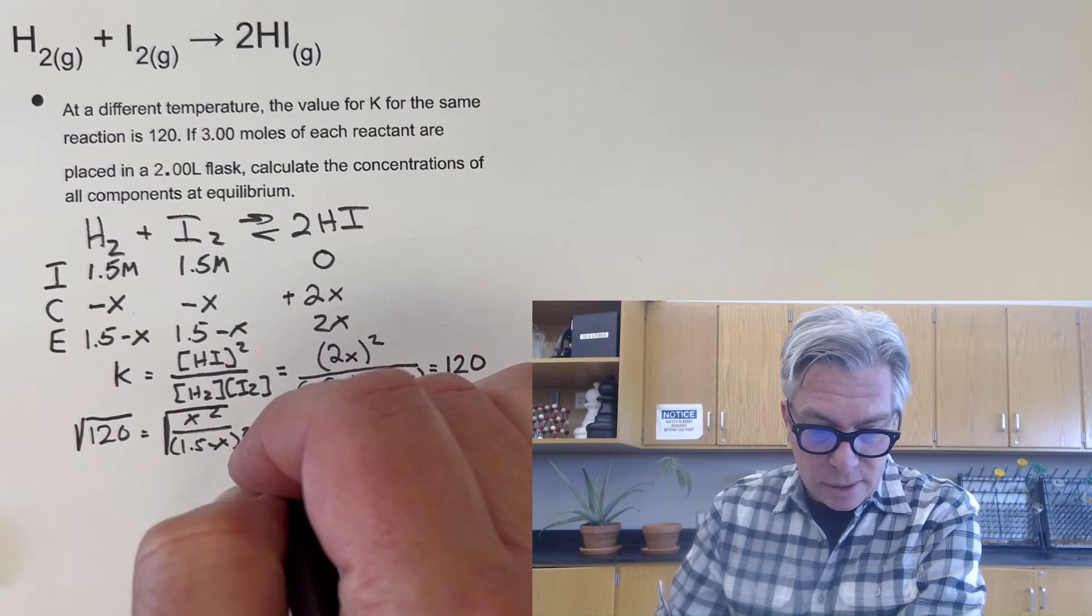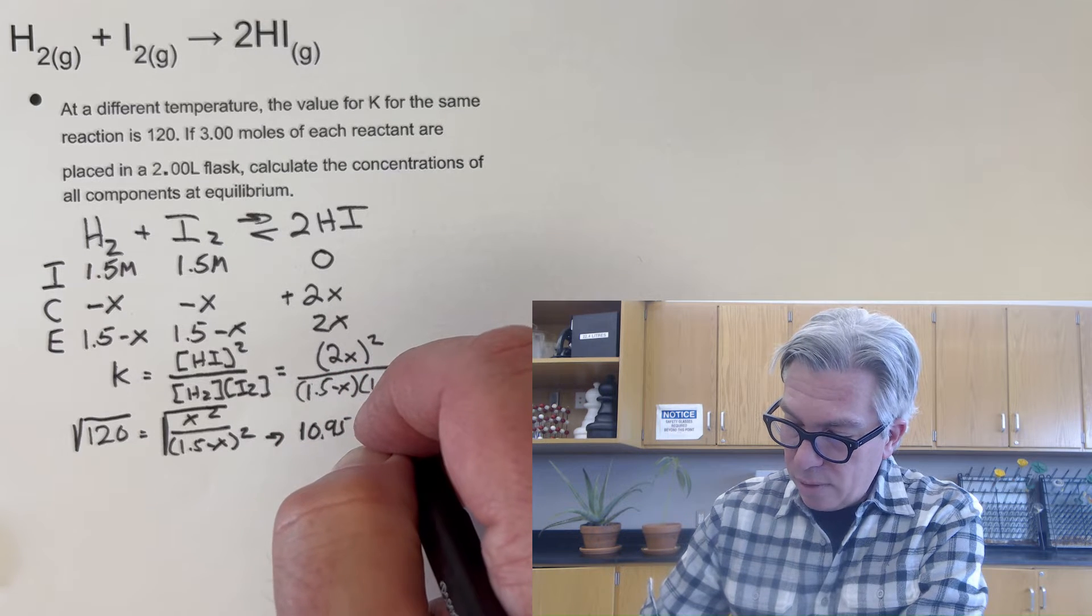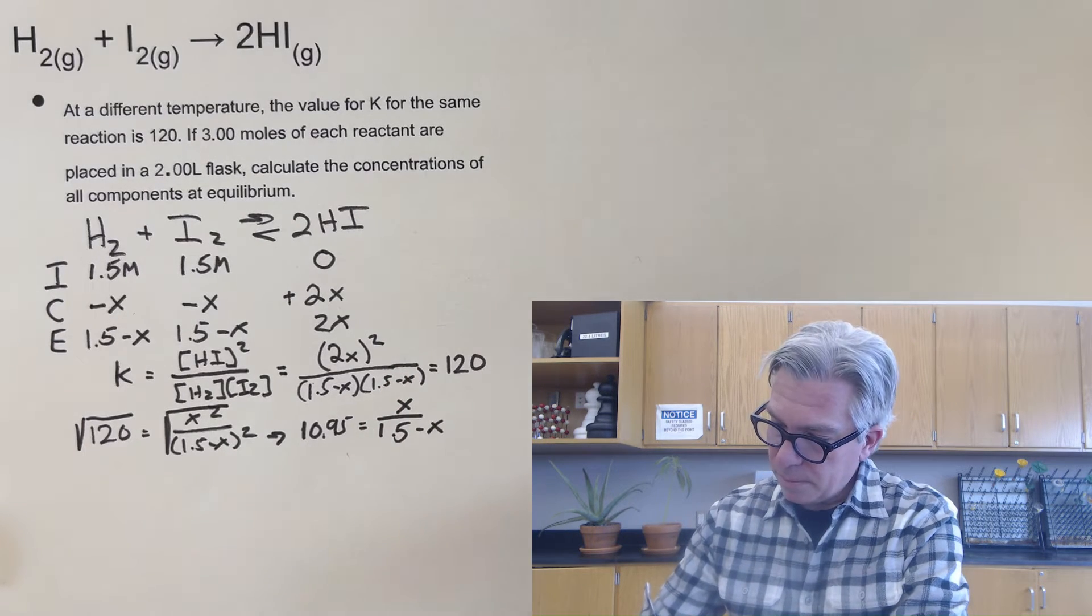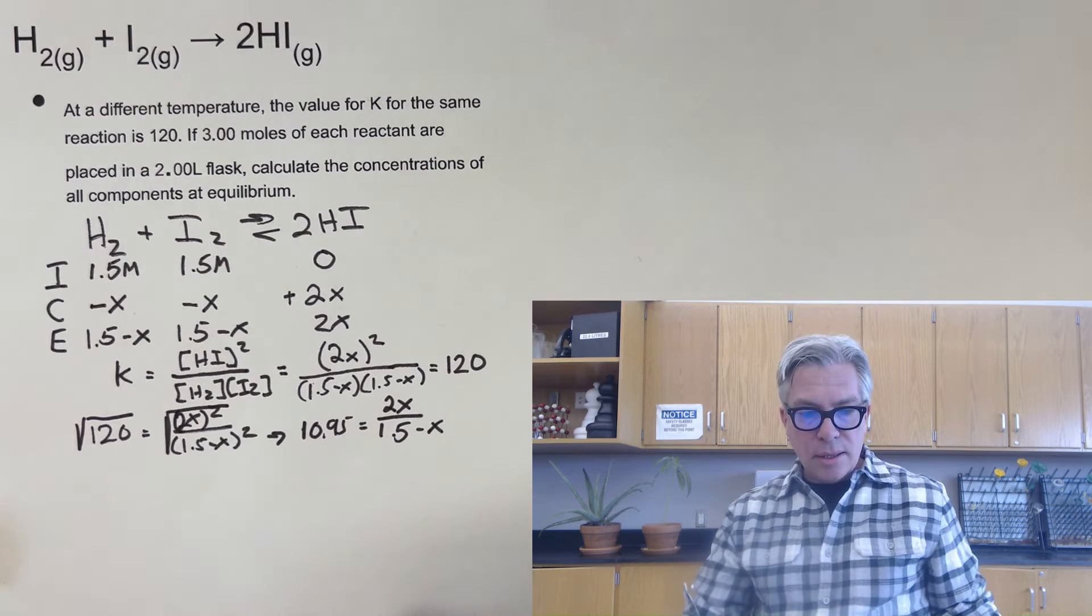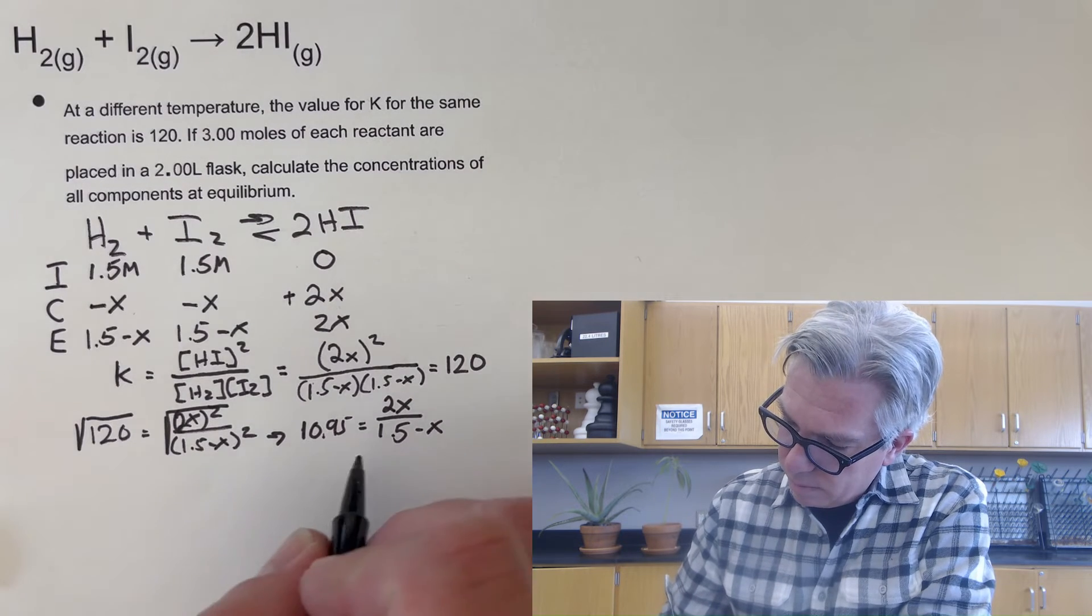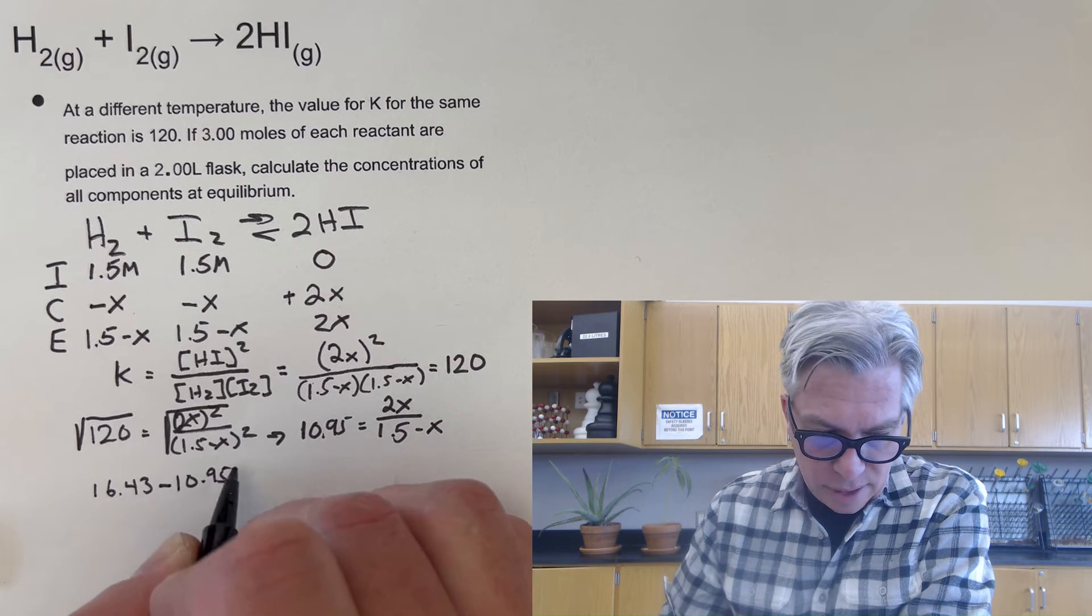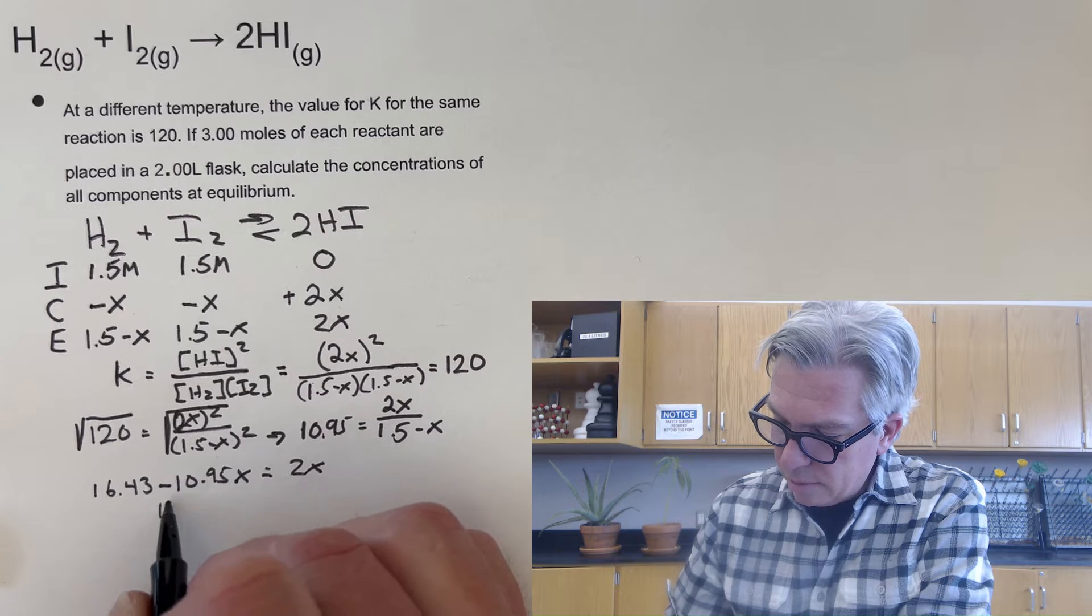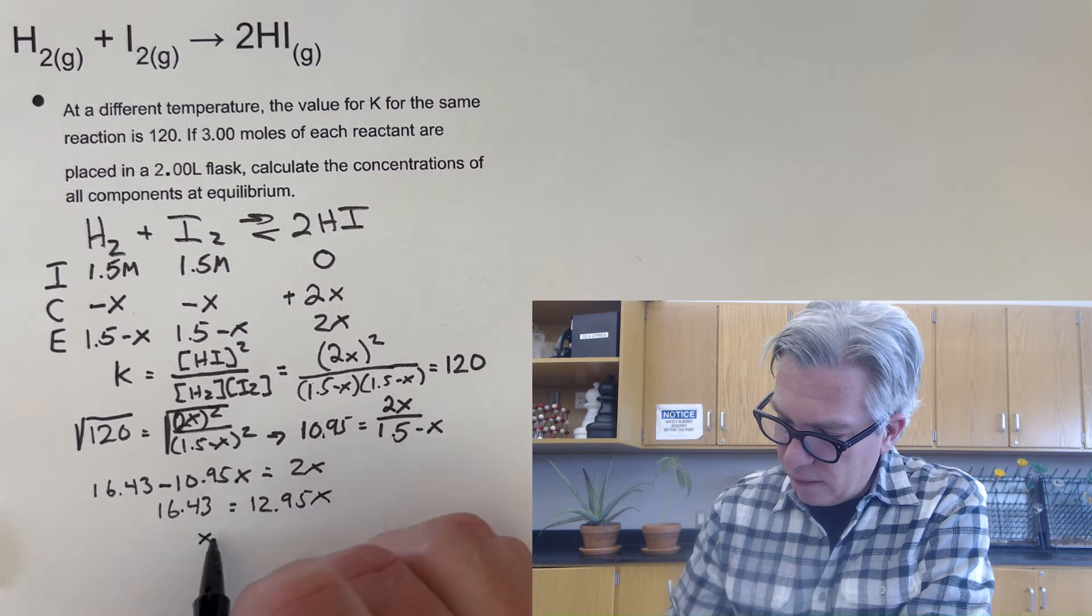Because by taking the square root of both sides, I now get a situation where the square root of 120 is 10.95. And now that's just going to be equal to 2X over 1.5 minus X. So then what I'm going to do is solve for whatever X is. So we're going to bring this over to the one side and distribute it. So we'll get 16.43 minus 10.95X. And that's all going to be equal to the 2X. Now let's get this off to the other side. 16.43 equals 12.95X. And I get an X value of 1.27.